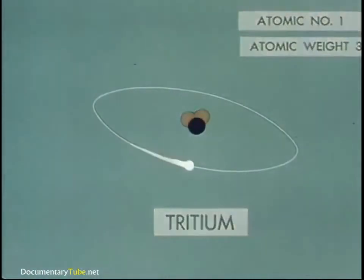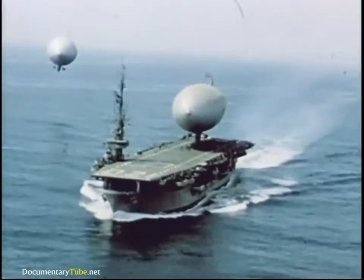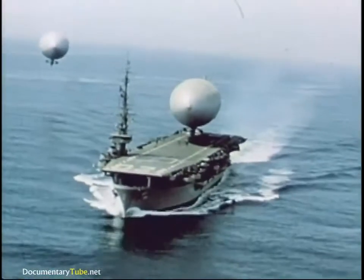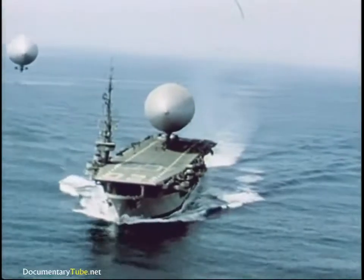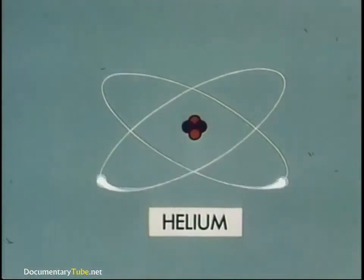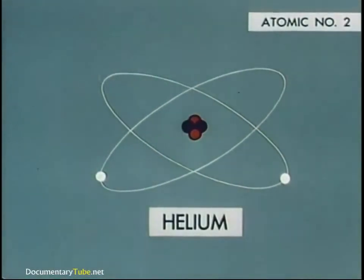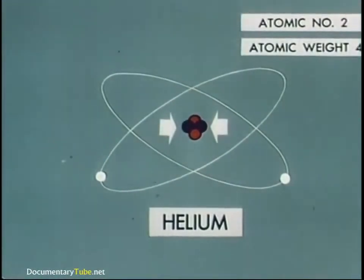One rung above hydrogen on the ladder of elements is helium. One of the uses for helium you're probably familiar with is in lighter-than-air aircraft. A helium atom has two electrons and a nucleus composed of two protons plus two neutrons. So helium has the atomic number two and an atomic weight of four — its protons plus neutrons.